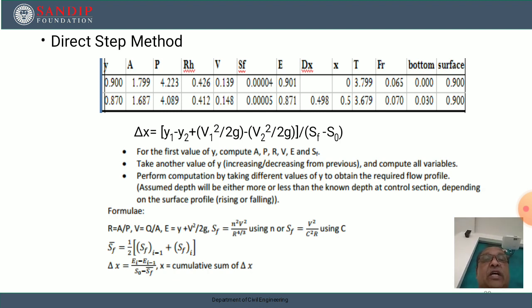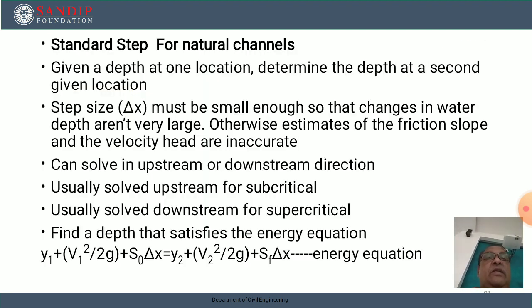The formulas used are: hydraulic radius R = A/P, velocity V = Q/A, specific energy E = y + V²/2g, energy slope Sf = n²V²/R^(4/3) using Manning's equation, or Sf = V²/(C²R) using Chezy's C values. Sf_avg = (Sf₁ + Sf₂)/2, and Δx = ΔE/(S₀ - Sf_avg). Then x equals the cumulative sum of Δx.